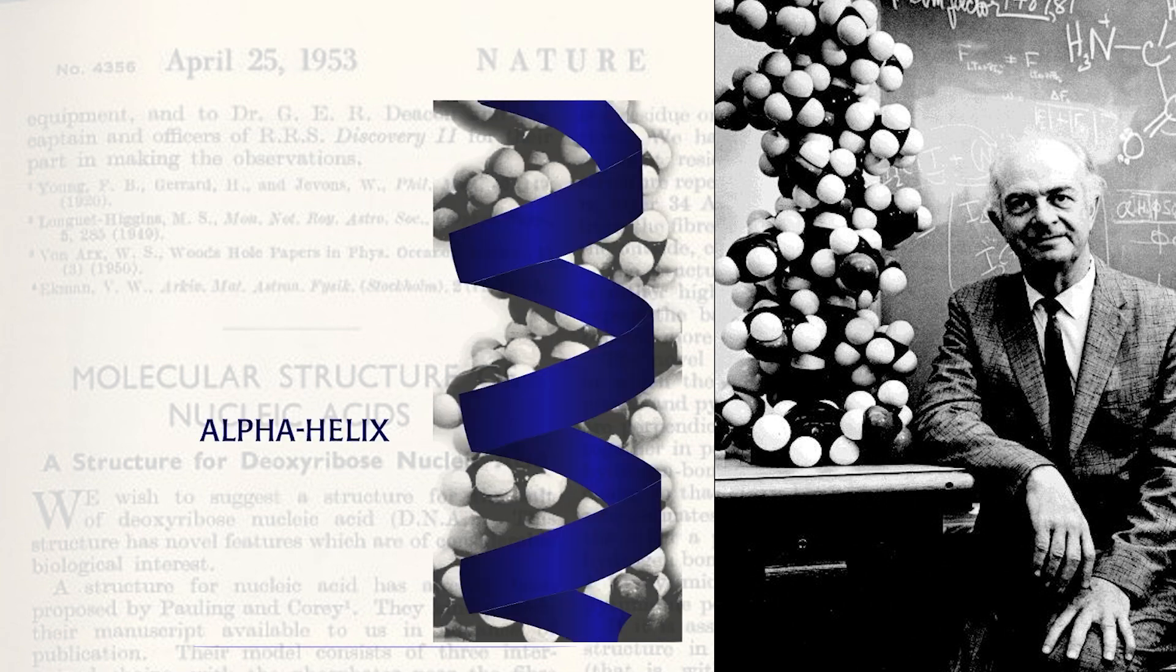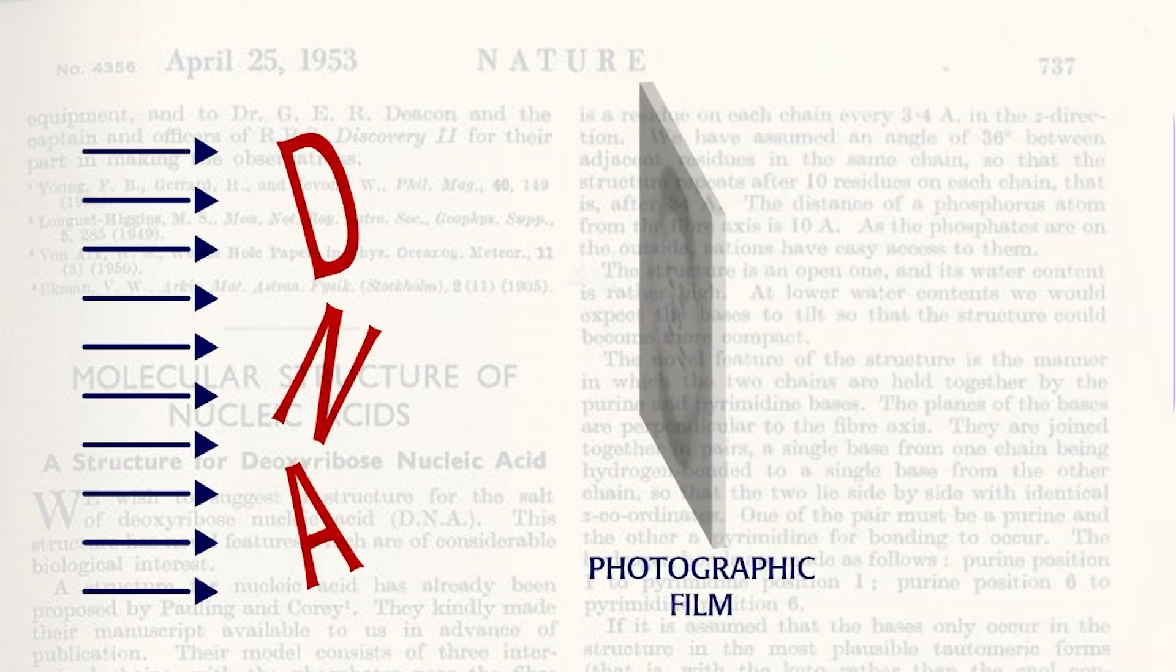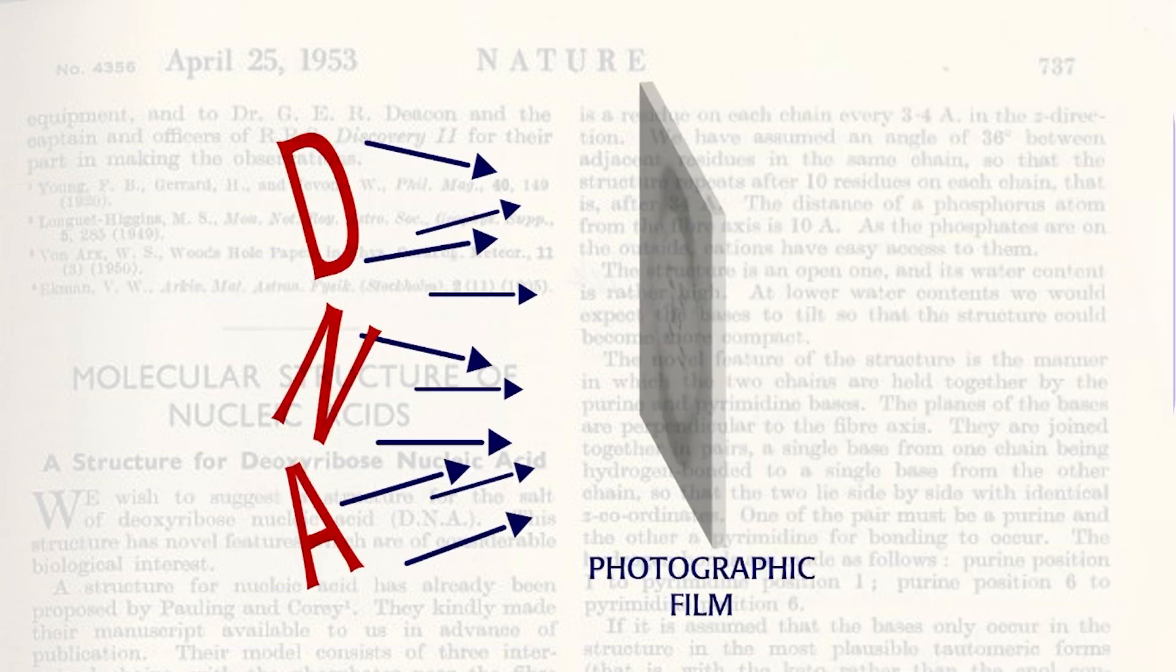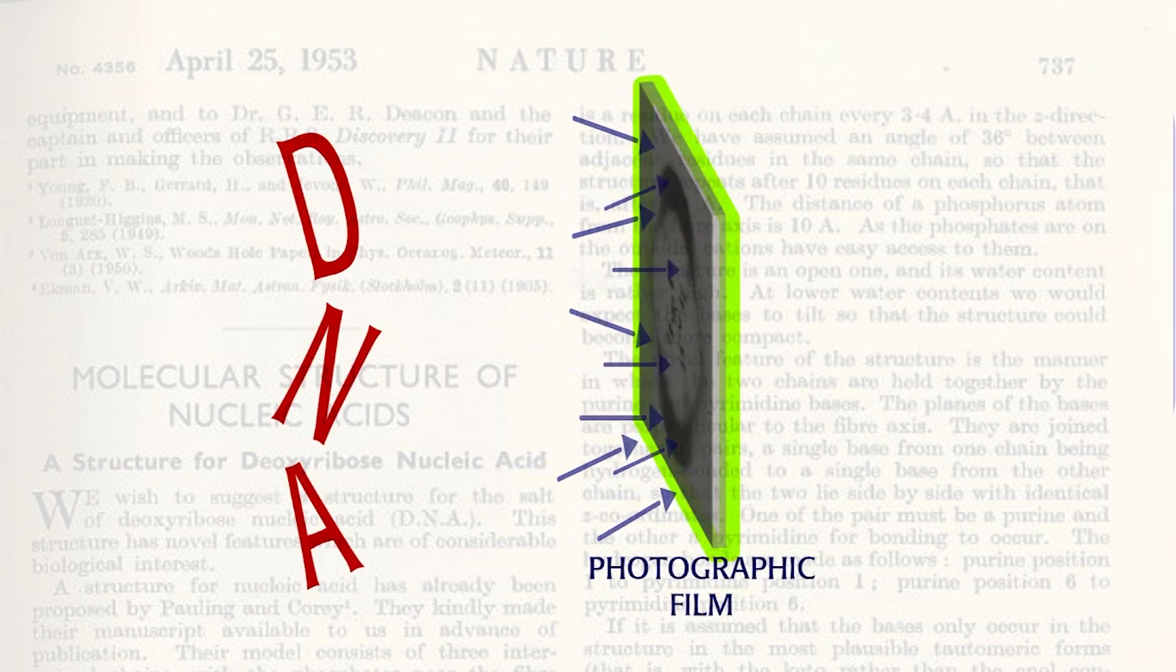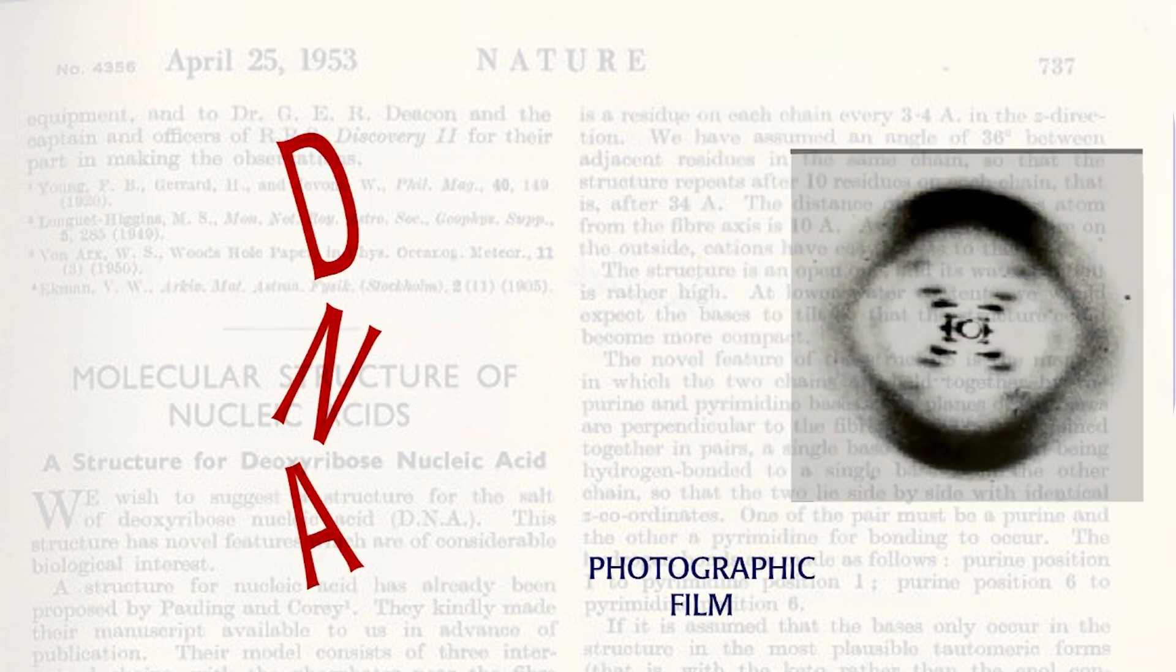X-ray diffraction patterns can provide a lot of information about the shape and structure of a molecule. If a stream of X-rays is directed at a crystallized substance, some rays are diffracted or scattered as they encounter the atoms. The scattered X-rays then interfere with each other and produce spots of different intensities, and these can be recorded on photographic film.